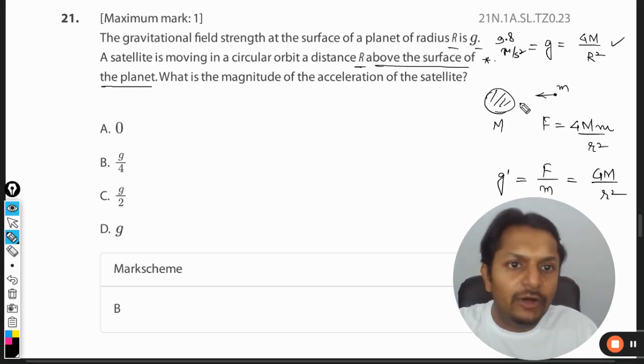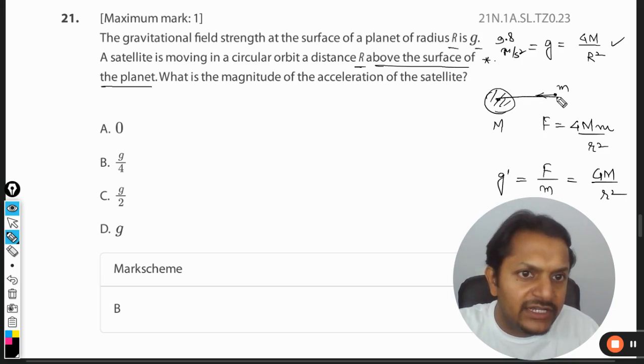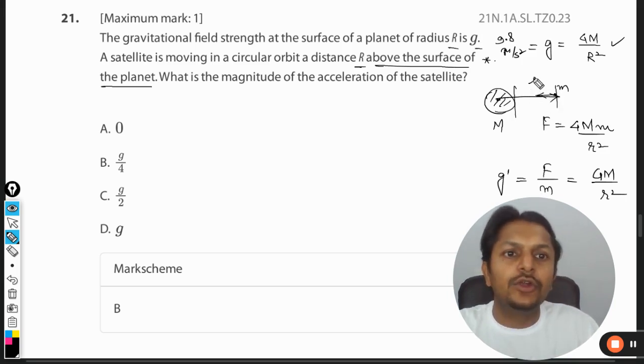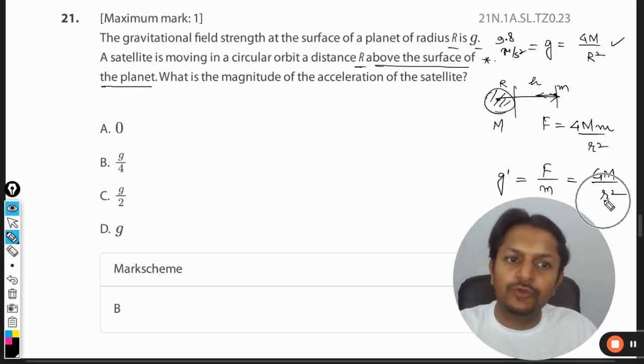But if you're talking about certain distance away from the earth, like there is a height that you are concentrating on, this is capital R. At that time, you cannot use GM by capital R square. You have to go for this.